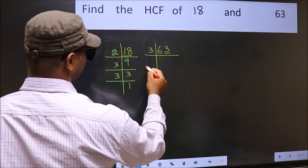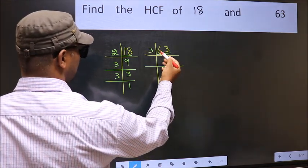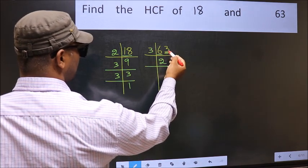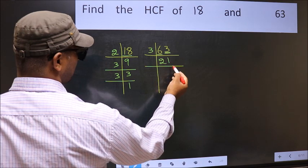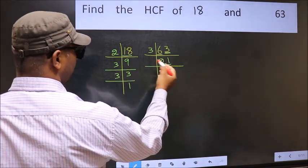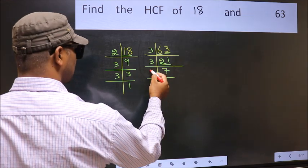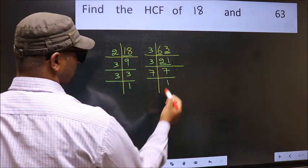So take 3. First number is 6. When do we get 6 in the 3 table? 3×2 is 6. The other number is 3. 3×1 is 3. Now 21 is 3×7. 7 is a prime number, so 7×1 is 7.